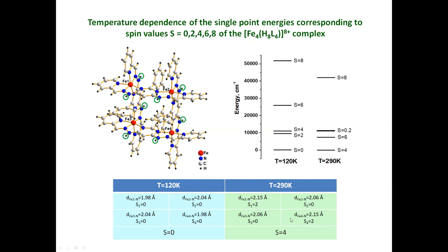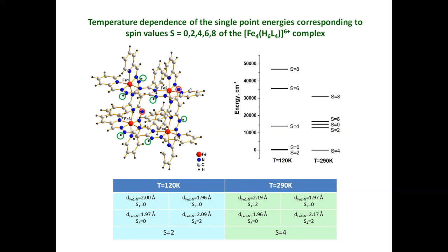Looking at this table, it is probably ferrum-1 and ferrum-4 ions which have average bond lengths equal to 2.15 Å that participate. The same calculation was performed for the complex with six protons — after addition of base, the complex lost two protons. In this situation, the ground state at low temperature has spin equal to two, and at high temperature the spin equals four. In this case, only one ferrum atom participates in the spin transition, showing that with additional base the number of ferrum ions participating in the transition is decreasing.